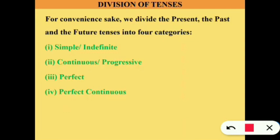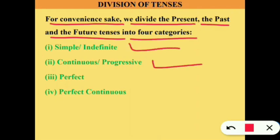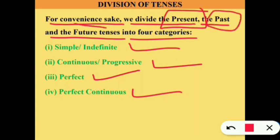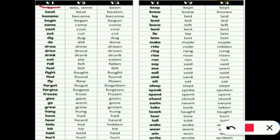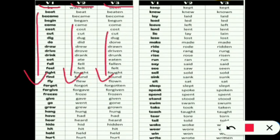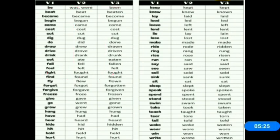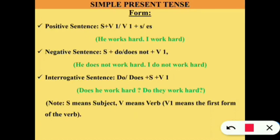For convenience, we divide tenses into four categories: present indefinite, present continuous, present perfect, and present perfect continuous. We have the same categories for past and future tenses as well. We will learn each one by one. But before that, you need to be acquainted with verb 1, verb 2, and verb 3. Without knowing these forms, you won't be able to understand the rules. You can take a screenshot of the chart.